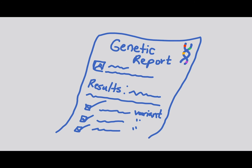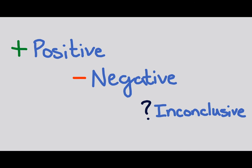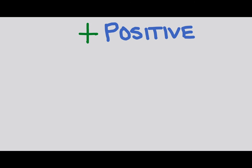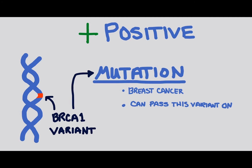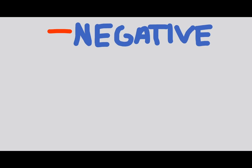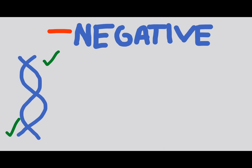A lot of people will be introduced to these terms through a medical genetics report. In this report, you are either positive, negative, or inconclusive. A positive result means they have found a misspelling that is a mutation, and this may confirm a diagnosis, indicate that you are a carrier, or indicate an increased risk of developing a disease such as cancer. A negative result means no misspelling was found in the DNA under consideration, indicating a person is not affected by a particular disorder or is not a carrier.